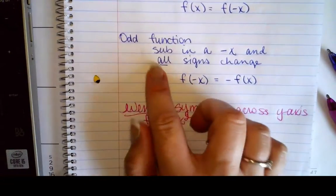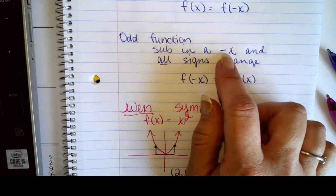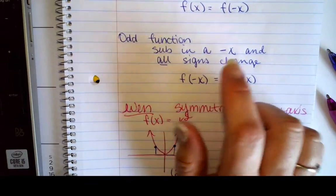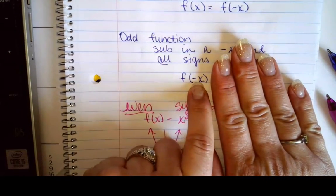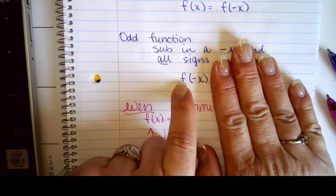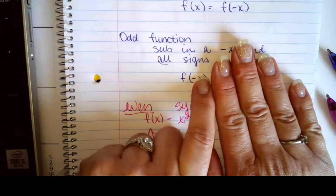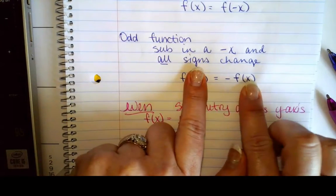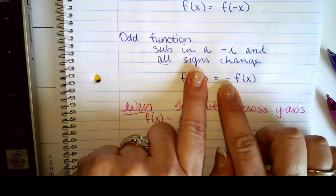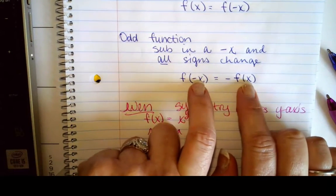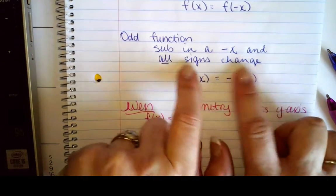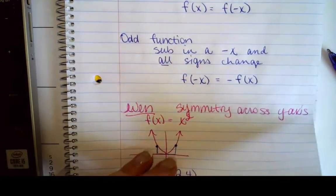So let's look at odd functions. If I substitute in a negative x, all the signs will change. So if I shove in a negative x, I get a value for y. If I shove in a positive x, it changes the value on the outside. So if I change the sign on x, it will change the sign on y.